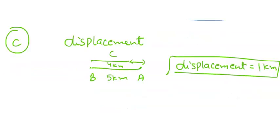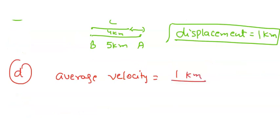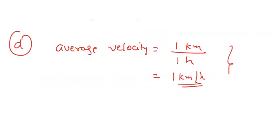In part D we have to calculate the average velocity. The average velocity is equivalent to the displacement, that is 1 km, divided by the time. Average velocity is displacement divided by total time. So this is 1 km per hour. This will be the required answer for all the given parts.